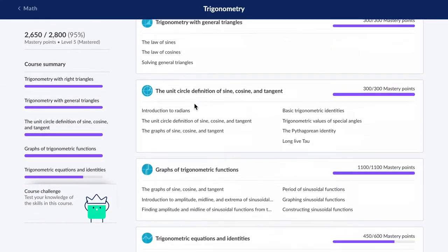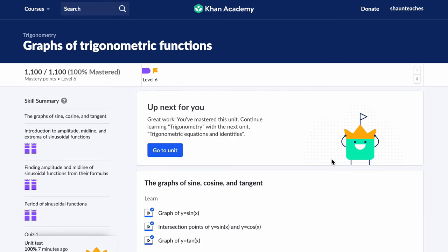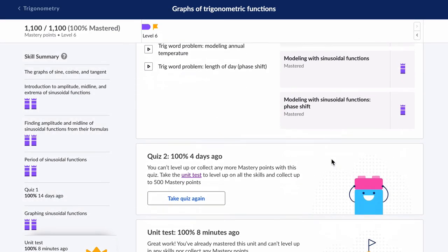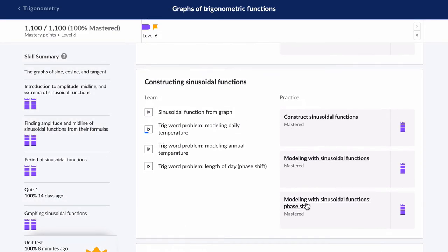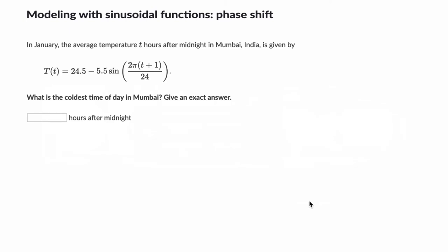Hello. In this video, we're looking at graphing trig functions and the very last practice module in the set, which is modeling with phase shift. So these problems are difficult, but I enjoy them. Like this problem right here. They say, in January, the average temperature T hours after midnight in Mumbai, India is given by this equation. What is the coldest time of day? Give an exact answer in hours after midnight. So pause the video, try it out, and then we'll solve it together.